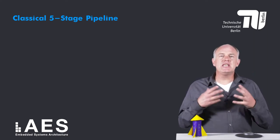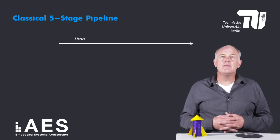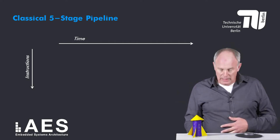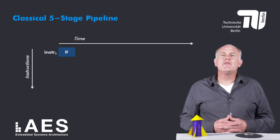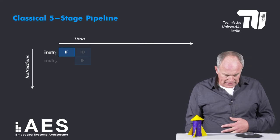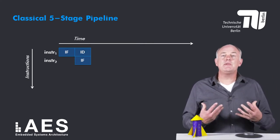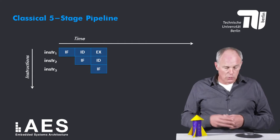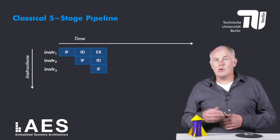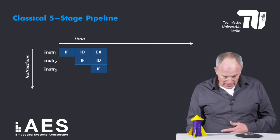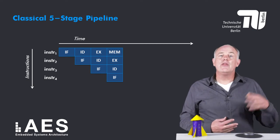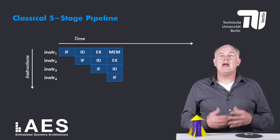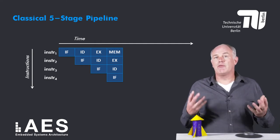Let's consider the execution of a sequence of four instructions. Here's a timeline and vertically are the instructions. In the first cycle we fetch the first instruction. In the second cycle we decode the first instruction and at the same time fetch the second instruction. In the third clock cycle we execute the first instruction, decode the second, and fetch the third. In the fourth clock cycle the MEM stage of the first instruction takes place, the execute stage of the second, the ID stage of the third, and the fetch stage of the fourth instruction.